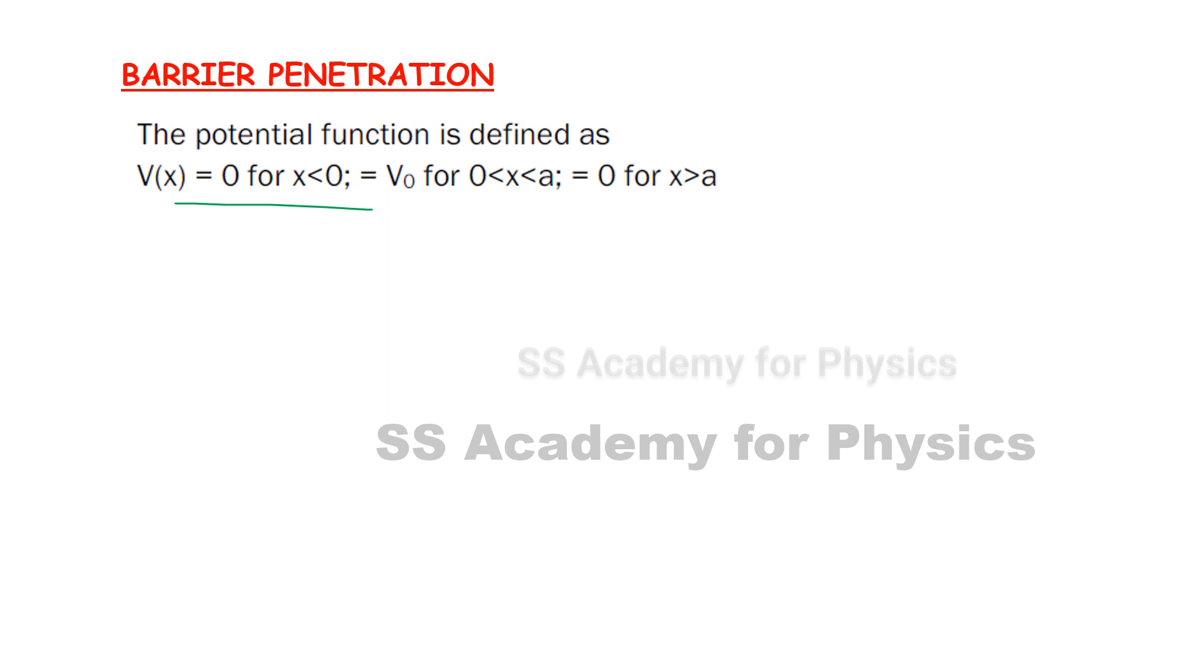V(x) equals zero for x less than zero, V equals V₀ for zero less than x less than a. In the potential well, the electron in a box cannot penetrate the outside and cannot jump outside. This is the potential function for barrier penetration.